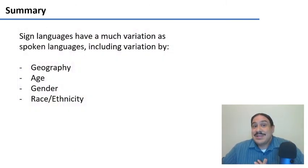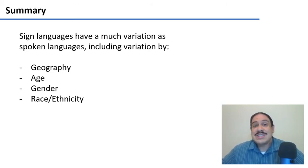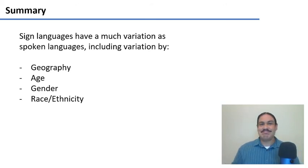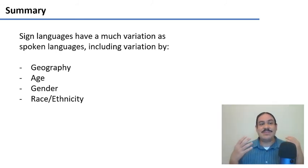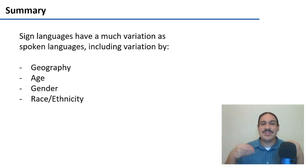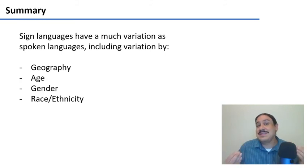That was a brief summary and list of examples of how sign languages have variation, just like spoken languages, because all humans want to express identity through features like where they're from, what their age is, what their gender expression is, and what race they're from.